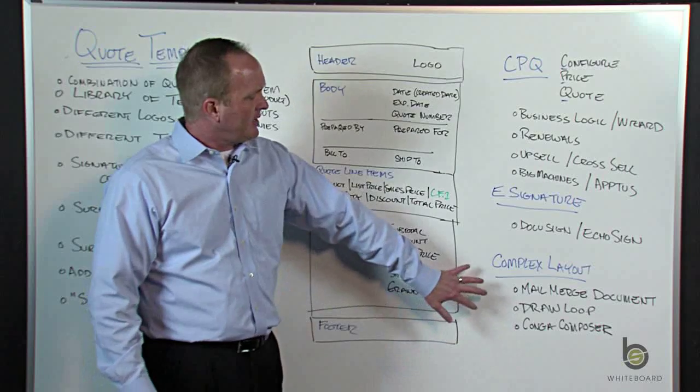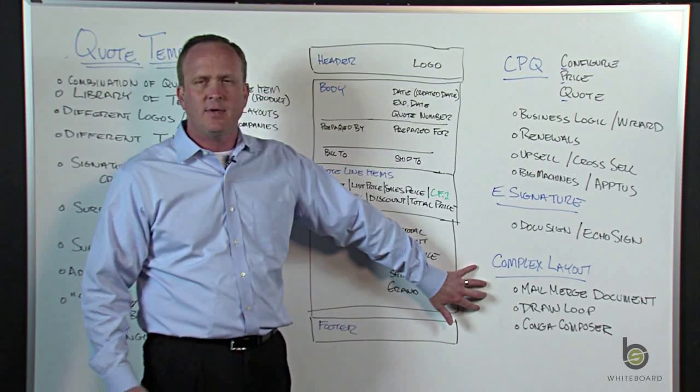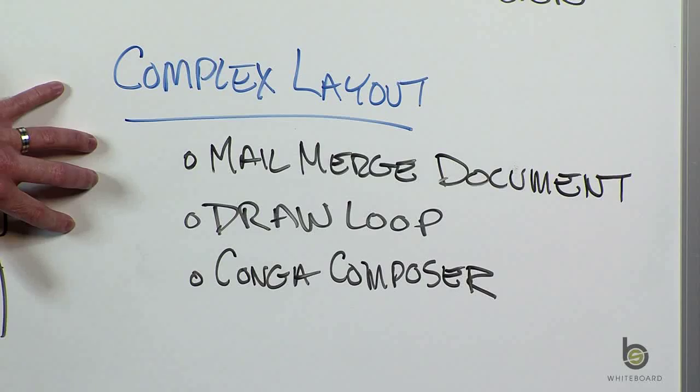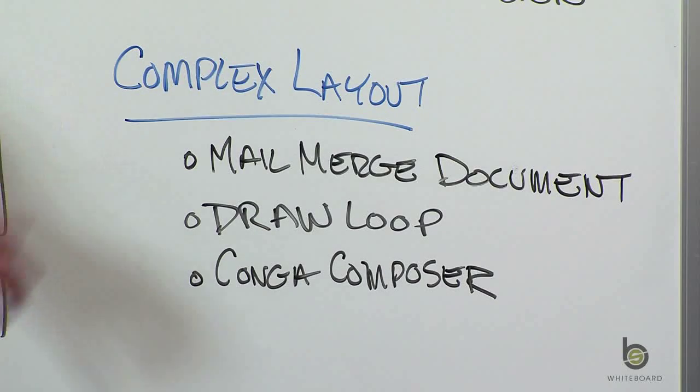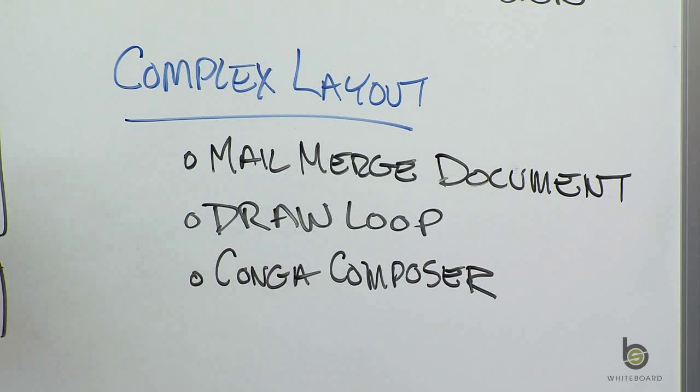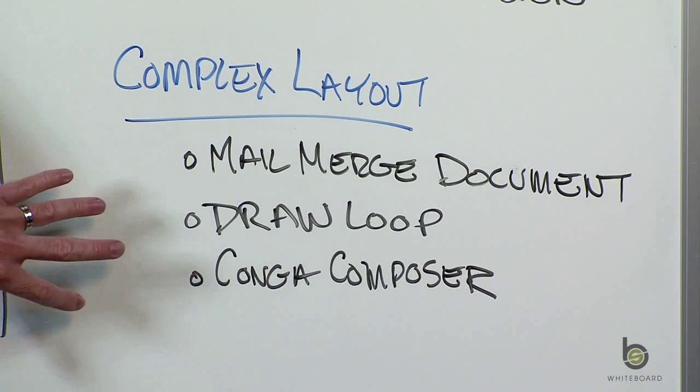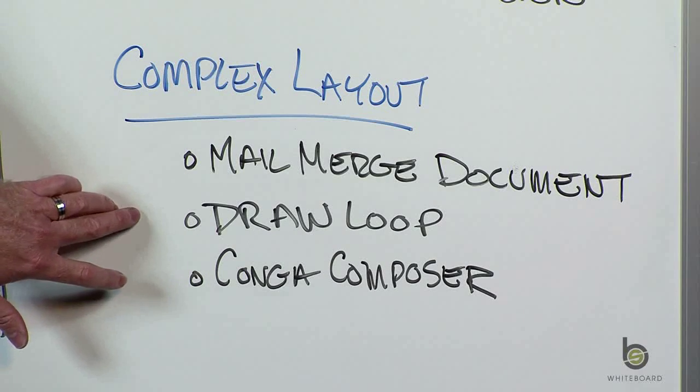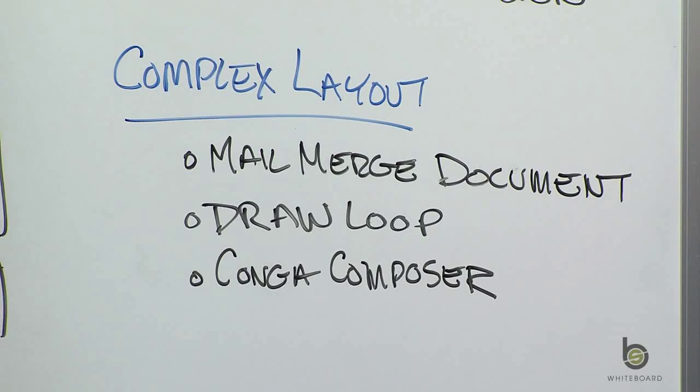Lastly, I want to highlight this section called Complex Layout. So if you find the quote templates a little too rigid, maybe you want to have multiple product blocks, you might try a couple other options. There's the native mail merge feature inside Salesforce to create off a Word document, and there's some third-party apps on the AppExchange that can create beautiful, complex documents that leverage the data that you have in Salesforce. Some of the leaders in this space is DrawLoop and Conga Composer, so take a look at those.